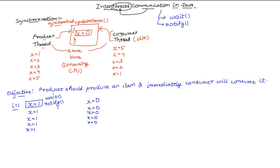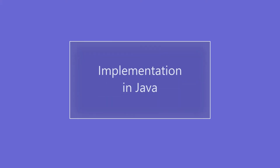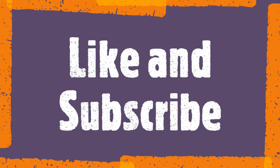After calling wait(), the producer calls notify(). The notify function triggers the thread that is trying to access the synchronized function - remember this function is synchronized in both cases. The consumer now knows the producer has notified it, so meanwhile it decrements the value of X by one, then waits and calls notify() itself to notify the producer. The producer then increments X again, calls these two functions, and this goes on five times - this is how we enable communication among threads in Java.